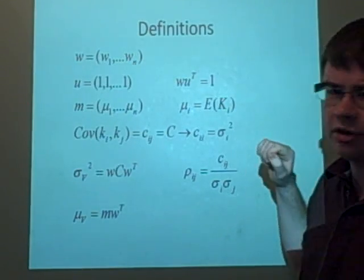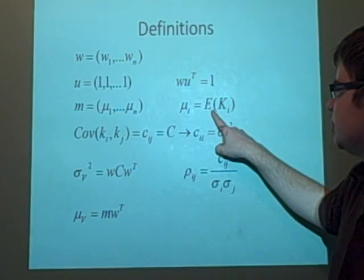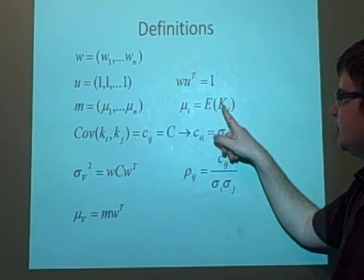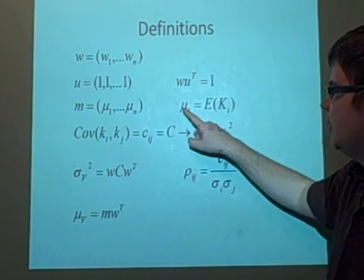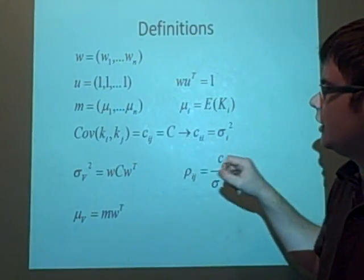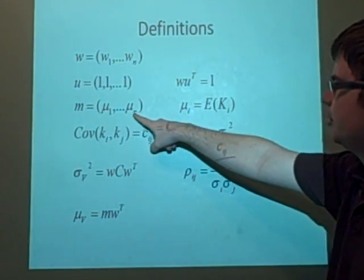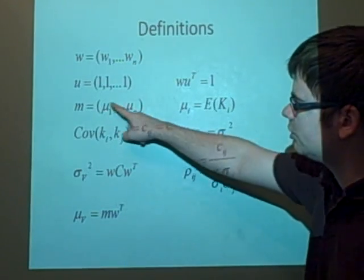Now this is a new notation we're going to use. Instead of putting the expected value of K as the expected return, we're now going to denote that as mu, and we're going to have those lined up in a vector and call that M.